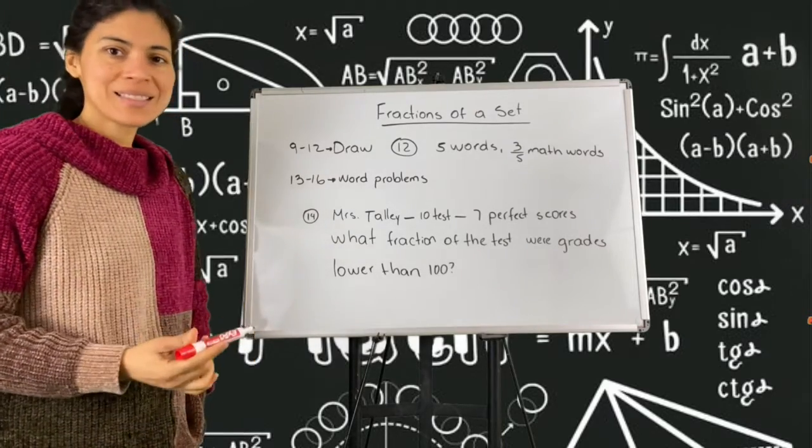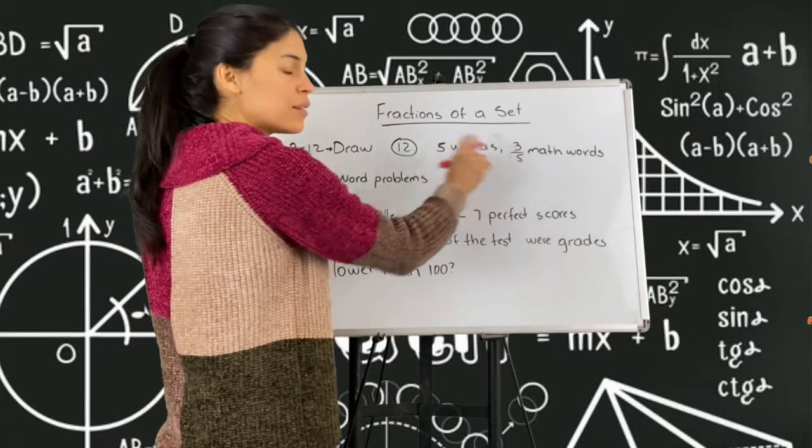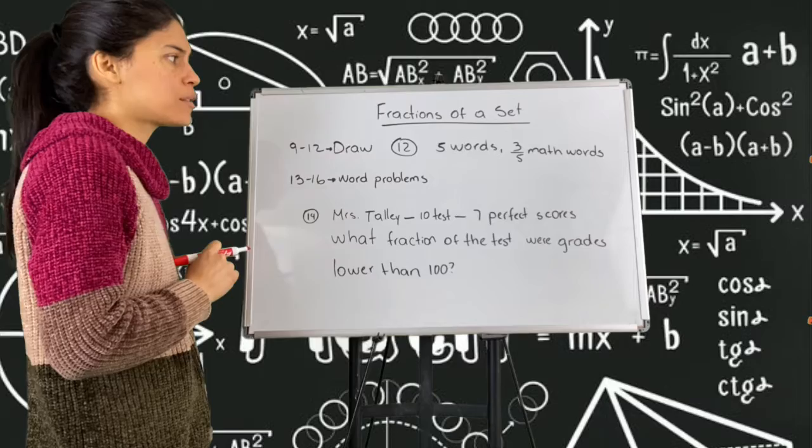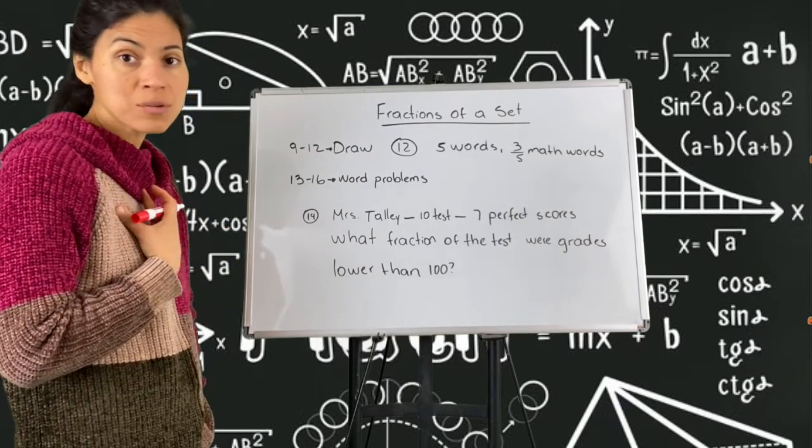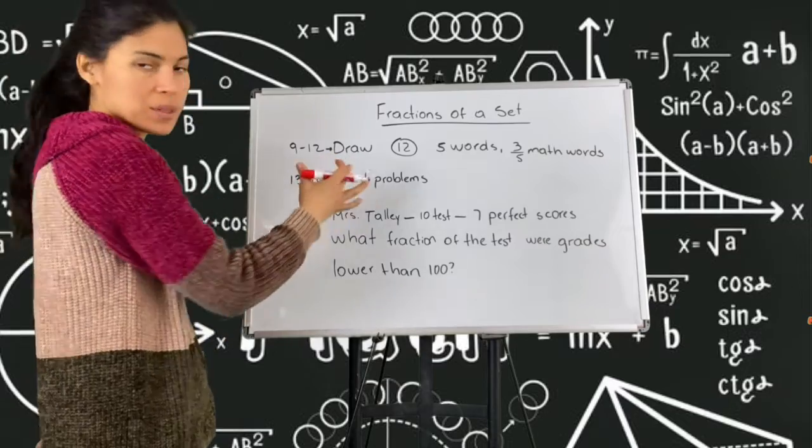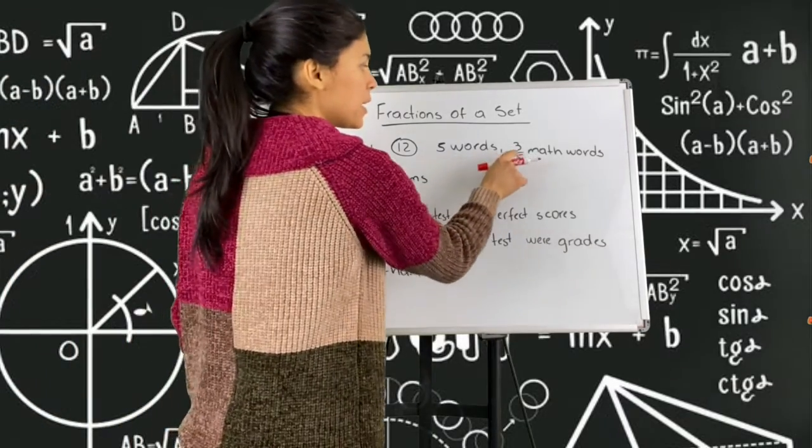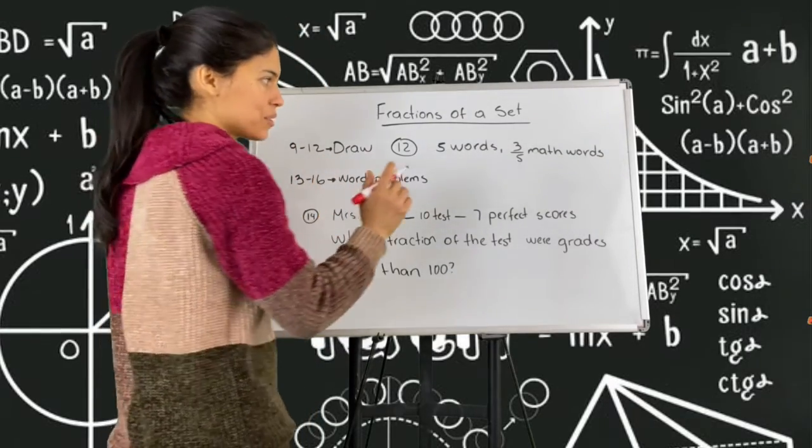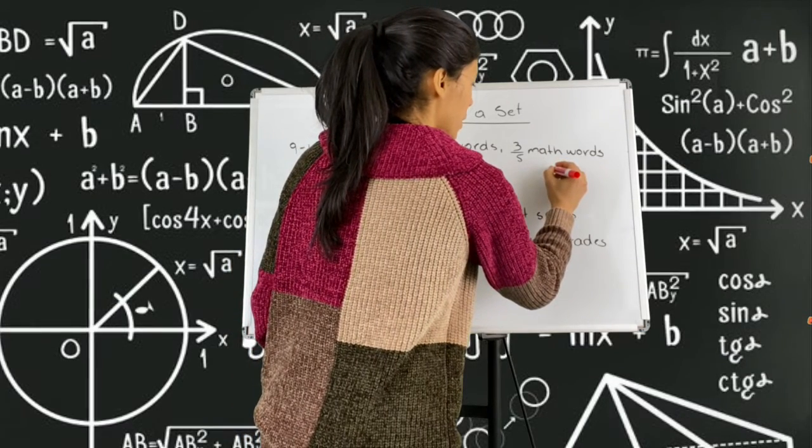They tell you that the set of objects is five words and three-fifths of those words are math words. So I know there need to be five words and I need to make the set. I need to draw it or write it. So I'm going to start with a math word. If three out of five are math words, I'm going to write three math words.